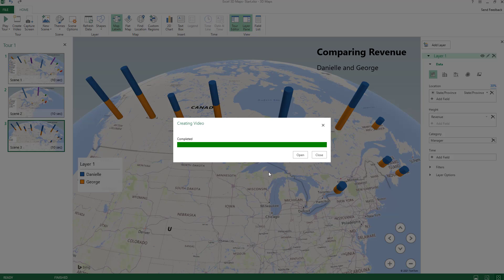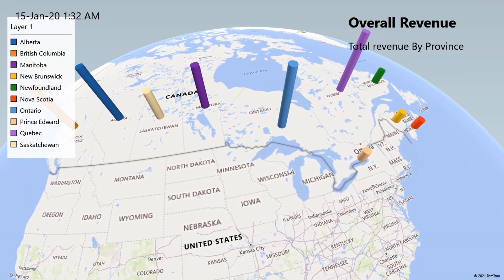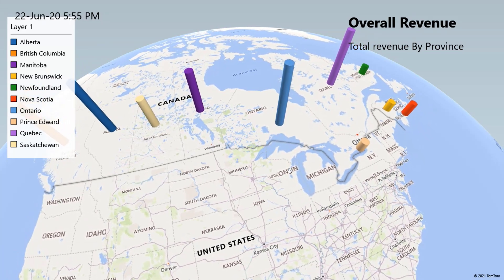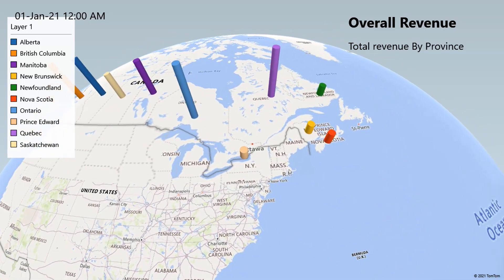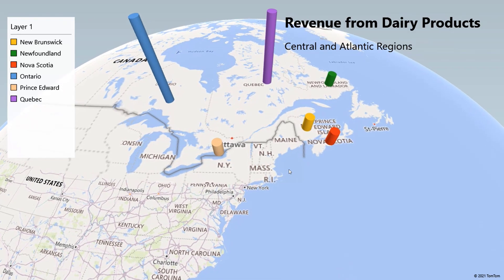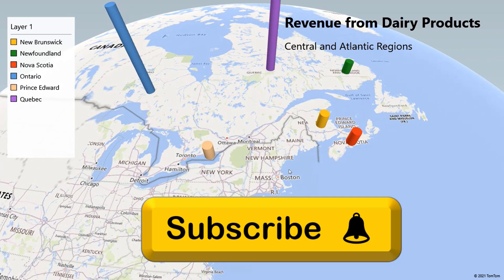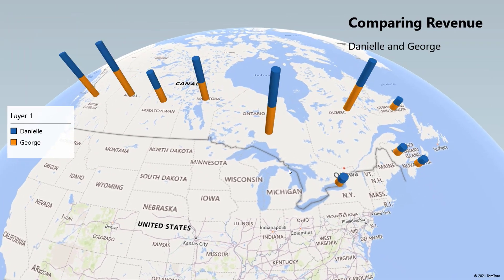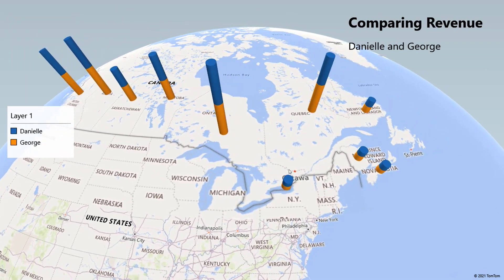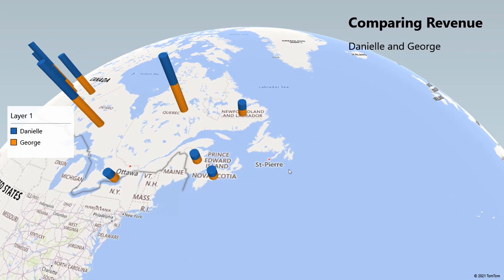The video is created and saved. I click Open to have a look — it switches from one scene to the next, and now I'm comparing the revenue between Daniel and George. When done, I hit Escape.